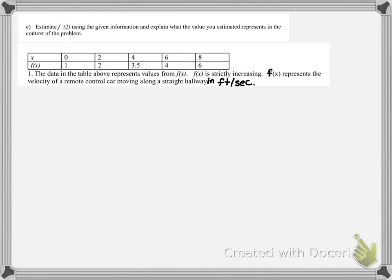In this problem, we've been asked to estimate f prime, or the derivative at 2, using the given information and explain what we've estimated, what it means in the context of the problem.